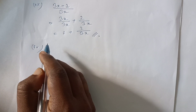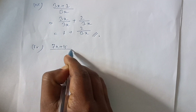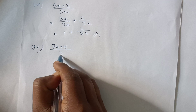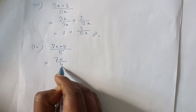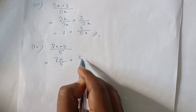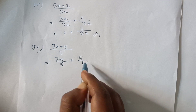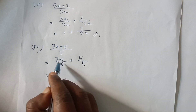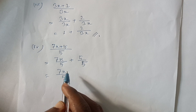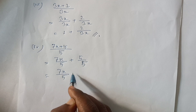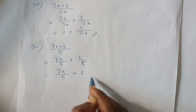Question number 2: 7x plus 5. 7x plus 5 divided by 5. This is the one. 7x plus 5, plus 5 by 5. Sorry — 5 by 5. 7x by 5. The other one: 7 by 5, x is the one. The other two, plus 5 by 5. This is the one.